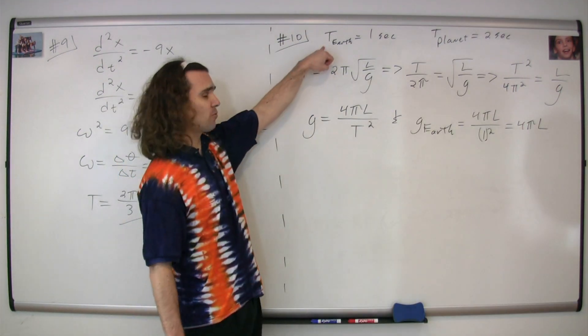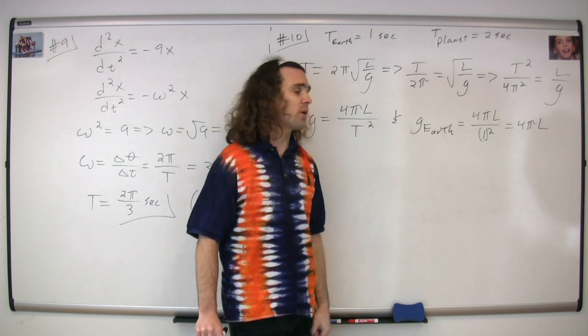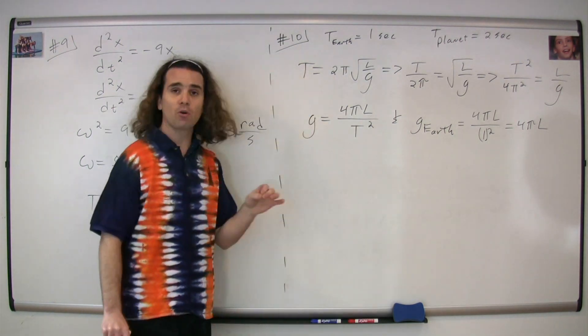By substituting in the period for the pendulum on Earth, we can figure out the acceleration due to gravity on Earth. One squared is just one, so g_Earth = 4πL.